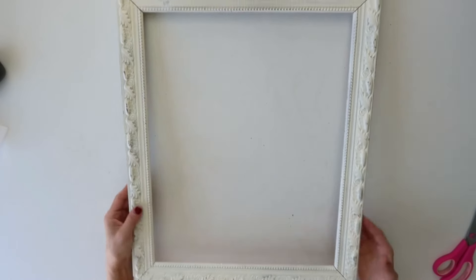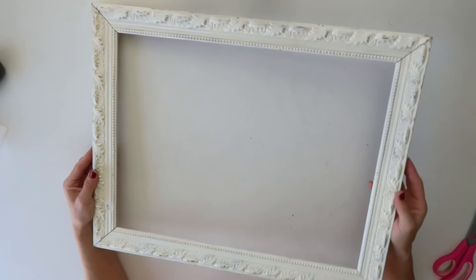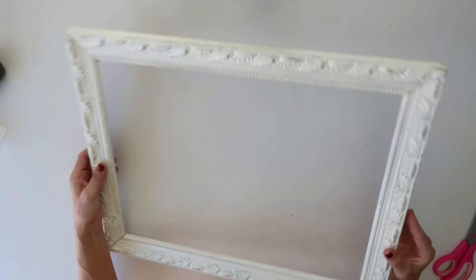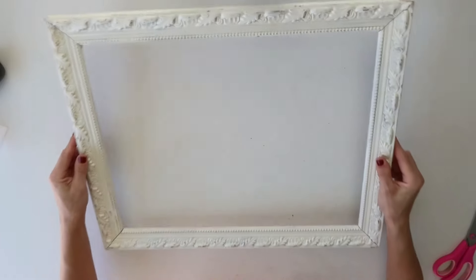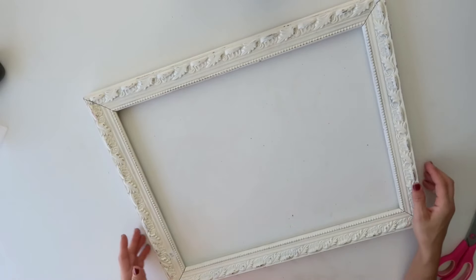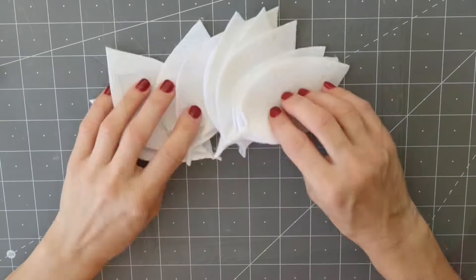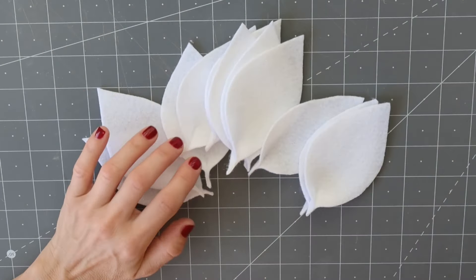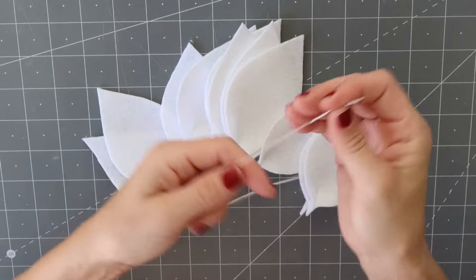All righty, let's go ahead and start with DIY number three. I had this large frame that I got several years back from yard sale and I kept it. I had previous projects done on this one, but I really like the way it looks like and how large it is, so I kept it. What I'm going to do right now, take the rest of these leaves that I created for my first project.